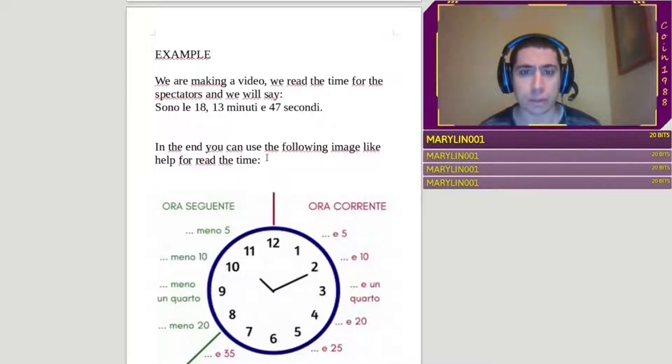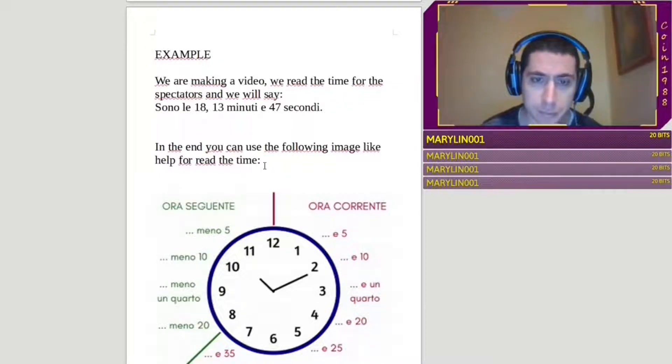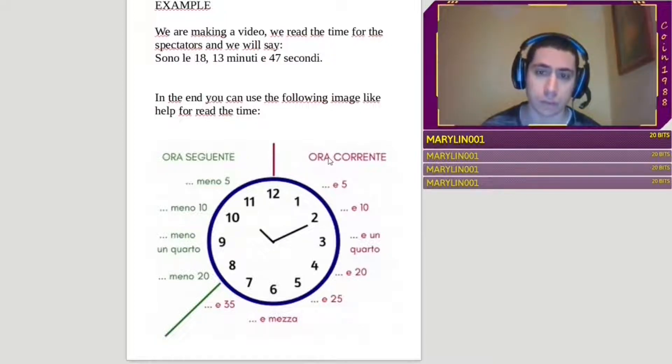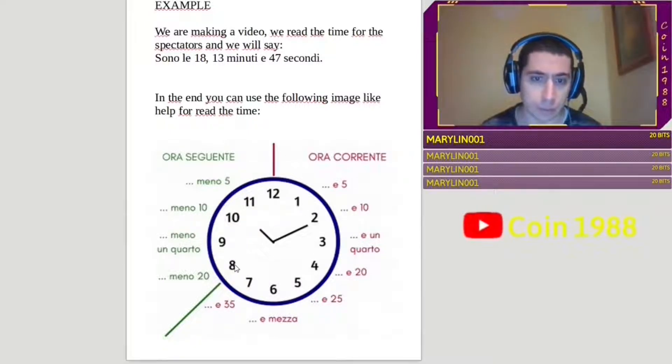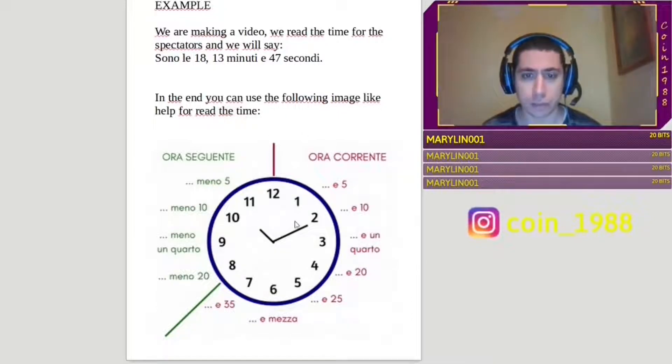In the end, you can use the following image, like help for read the time. Ora corrente mean the normal hour, ora seguente is the next hour. So, as you can see, from the 8, there is this green line, and start meno. Do you wanna try to read all the time?